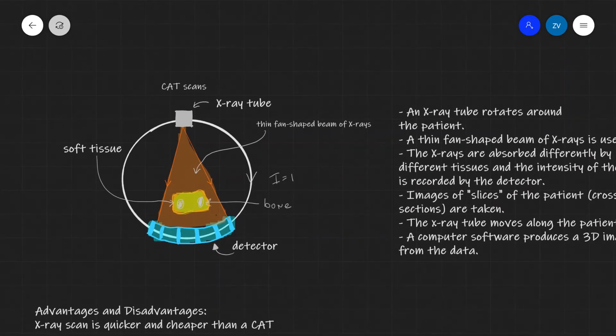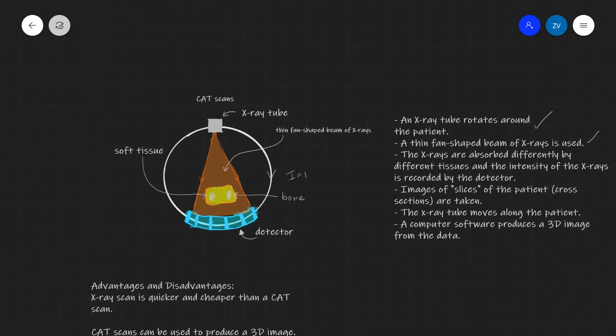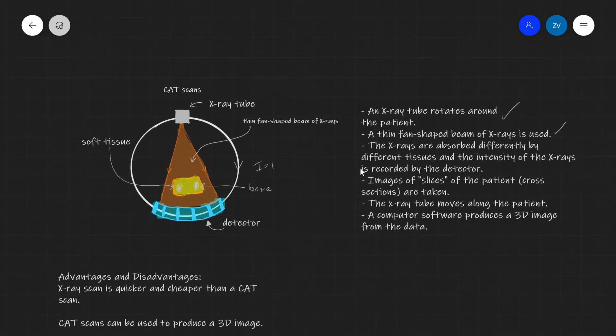So as we said an x-ray tube will be rotating around the patient and of course we're going to be using a thin fan shaped beam of x-rays. The x-rays are absorbed differently by different tissues and the intensity of the x-rays are detected or recorded by the detector. This allows essentially for an image of the slice of the patient or the cross-sectional area to be taken.